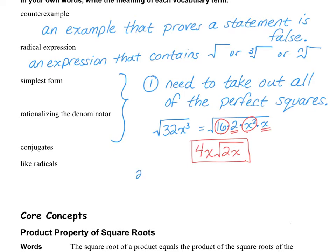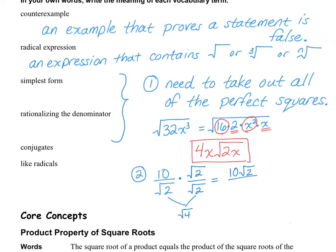The second thing that you need to make sure is done is rationalizing the denominator. Rationalizing the denominator means that you're not allowed to have a square root or a third root or any kind of radical expression on the denominator. So let's say I had 10 divided by the square root of 2. The square root of 2 is not allowed on the denominator. So what that means is we're going to multiply by a magical 1. This magical 1 allows the radical sign to go away on the denominator. So on the top, I have 10 multiplied by the square root of 2. And on the bottom, I have the square root of 4, because that's square root of 2 times square root of 2, which equals 2. I can simplify this: 10 divided by 2 is 5. So then my final answer here would be 5 times the square root of 2.